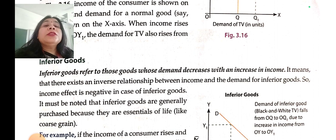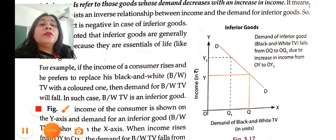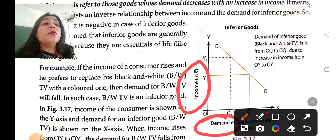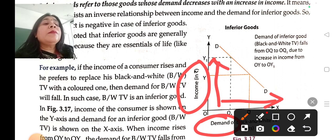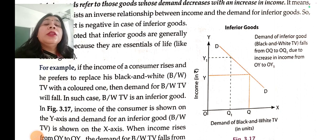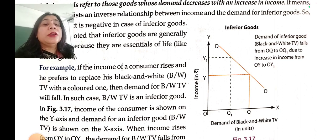In the case of inferior goods, these are goods whose demand decreases with the increase in income. If the income of a consumer increases, they will start demanding superior products and not the inferior ones. As depicted in the diagram for inferior goods — for example, a black and white TV — when the income of a consumer increases from Y to Y1, the demand declines from Q to Q1, because the consumer will now demand more of a product of superior quality.